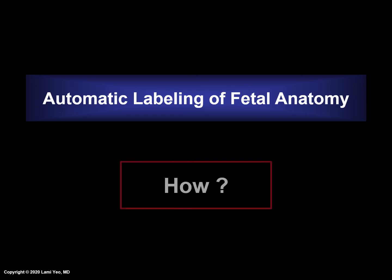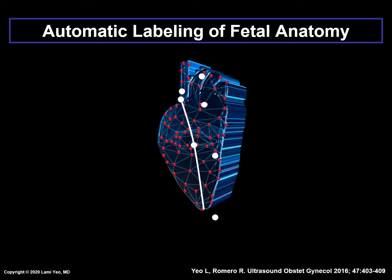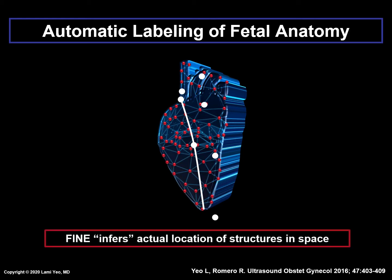So how can automatic labeling in the FINE method occur? Automatic labeling through intelligent navigation of anatomical structures within the cardiac diagnostic planes is possible because FINE infers the actual location of structures in space. This occurs regardless of the way in which the spatiotemporal image correlation, or STIC, volume data set was acquired.